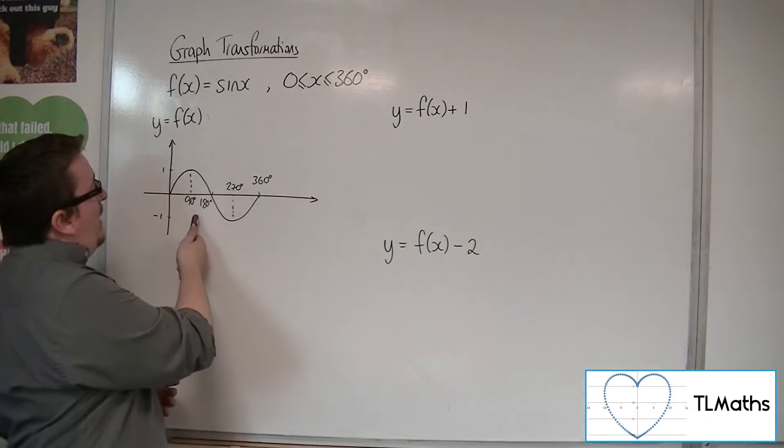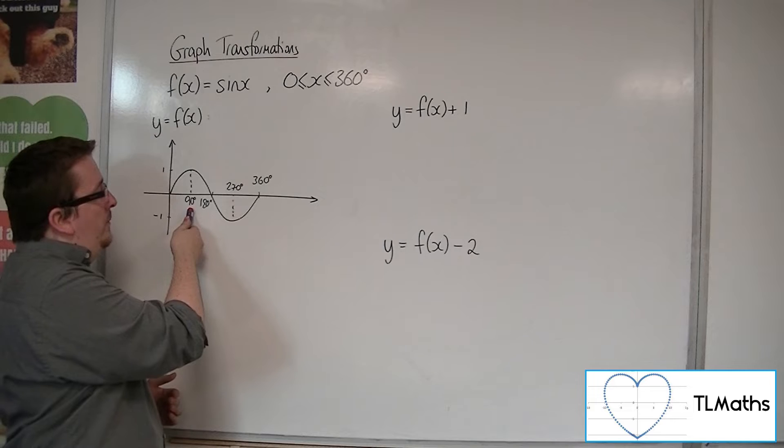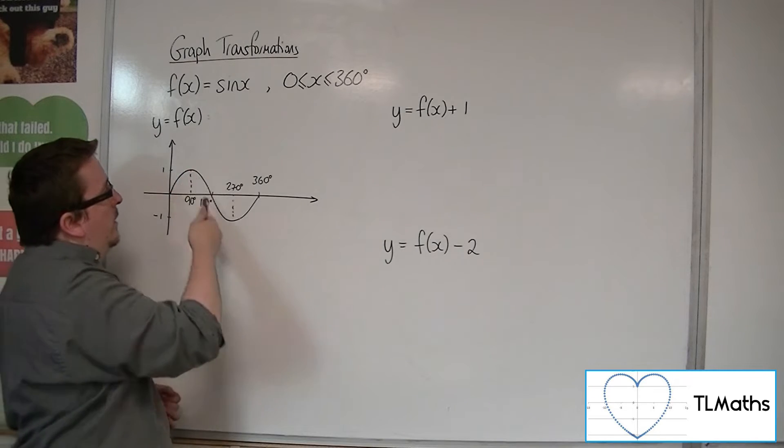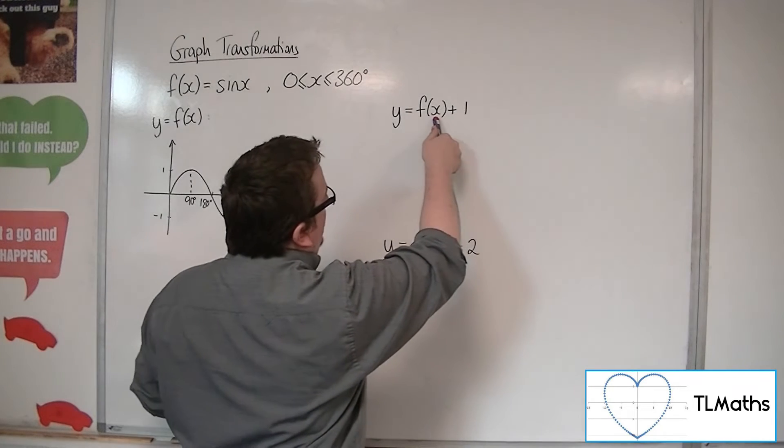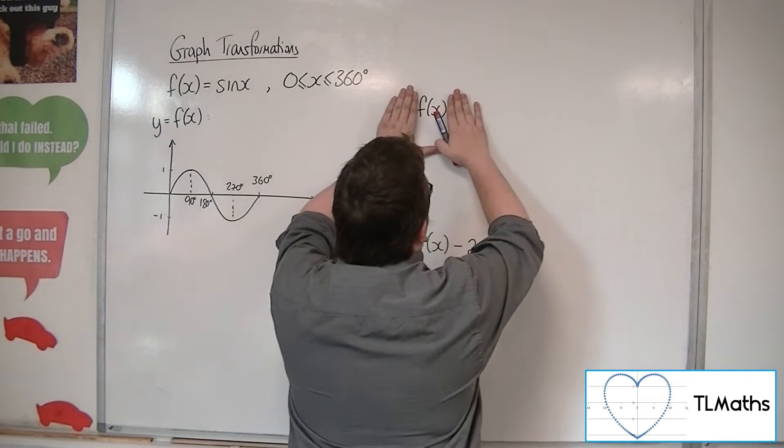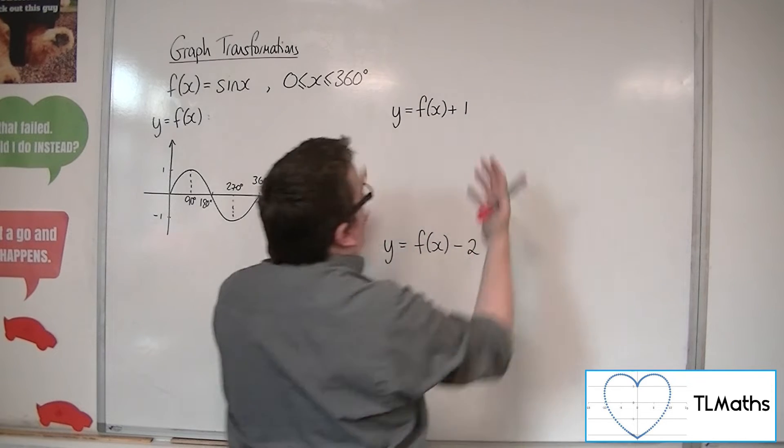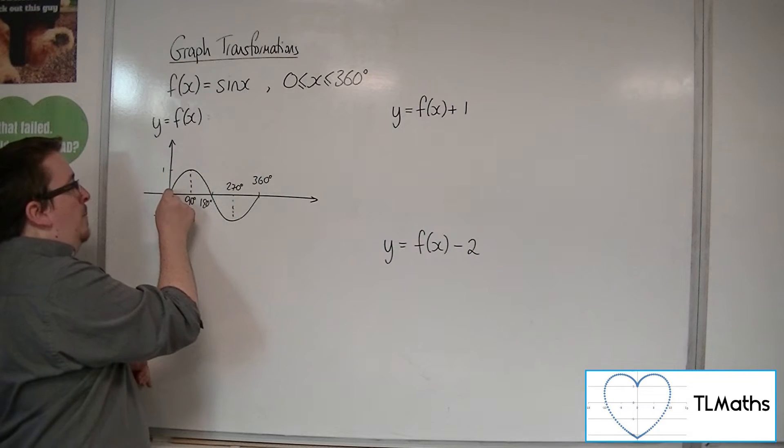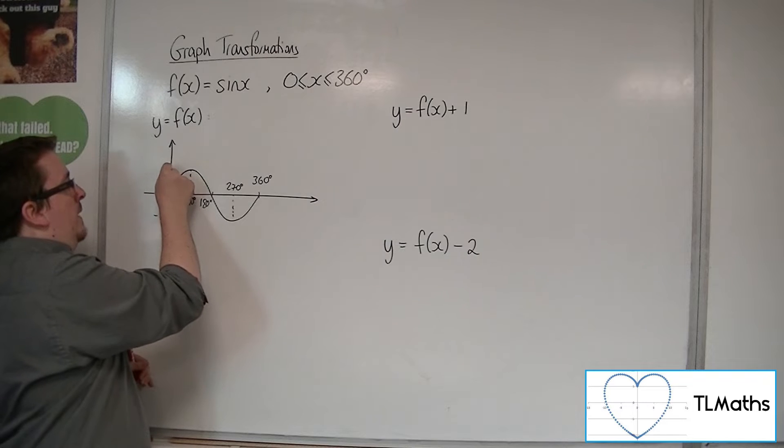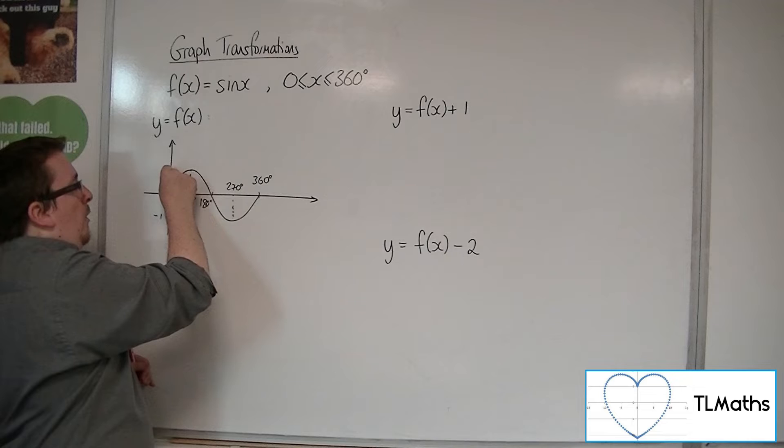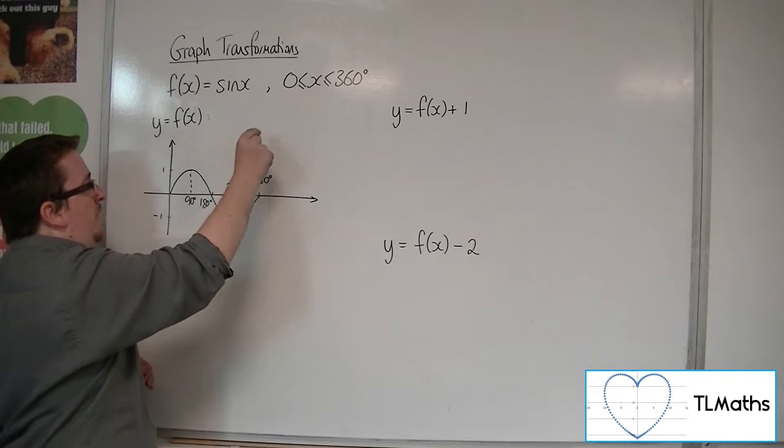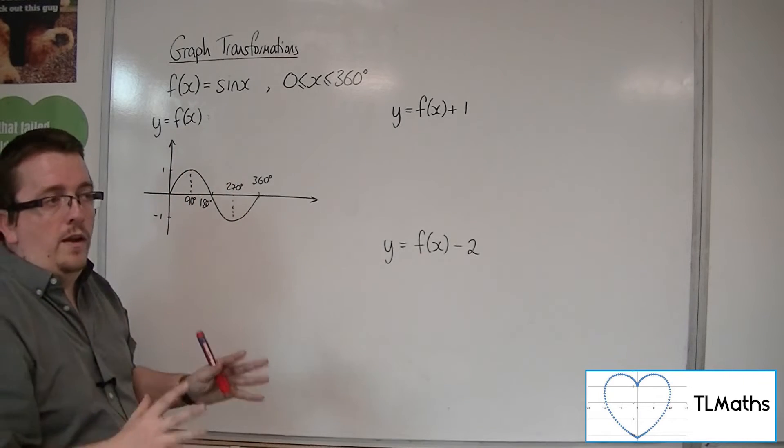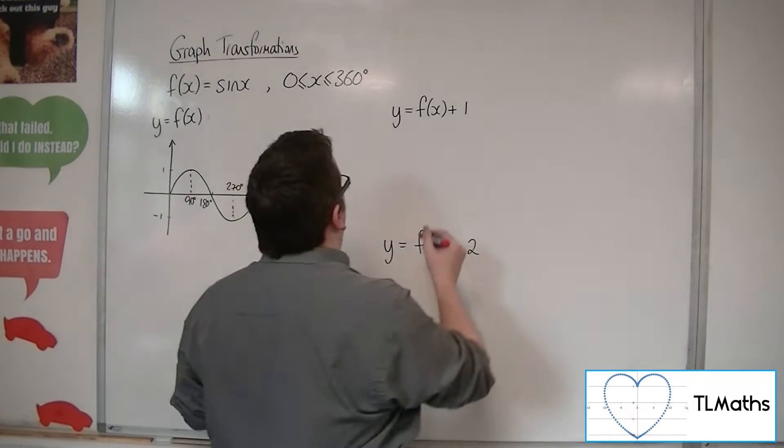Likewise, when x is 90 degrees, I get 1. So when I put x is 90 into f, I get 1, then I'm adding 1, and I get 2. So this point will become 0, 1. This point will become 1, 2. So what's happening is the curve is moving up by one point, one unit.